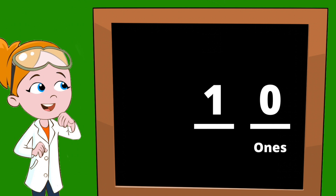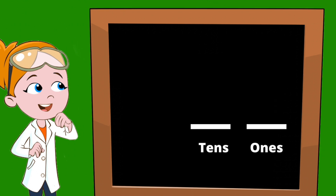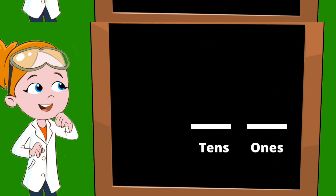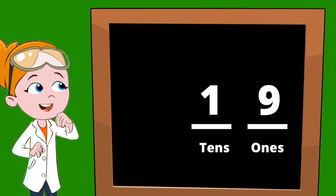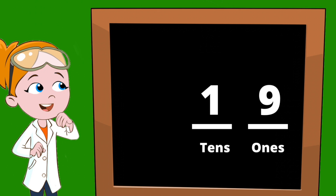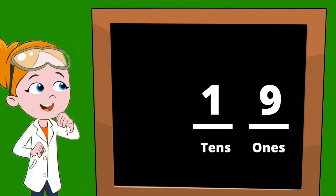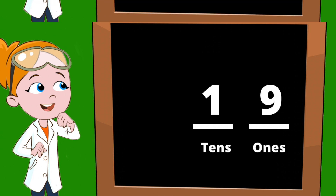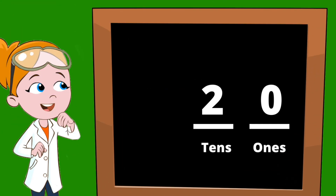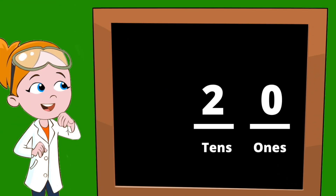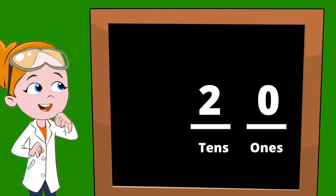The number in the tens column changes when the ones get too high. For instance, the number 19 — the ones have a nine and can't go any higher, so we need to add another ten to bring our number to twenty. Now we have two groups of ten with zero ones.